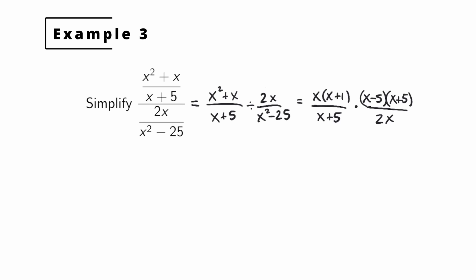We notice an (x plus 5) factor in the numerator and an (x plus 5) factor in the denominator, so we cancel those out. We also have a factor of x in the numerator and a factor of x in the denominator, so those cancel too. Multiplying across, that leaves us with (x plus 1) times (x minus 5) in the numerator, divided by 2. And that's division of rational expressions.